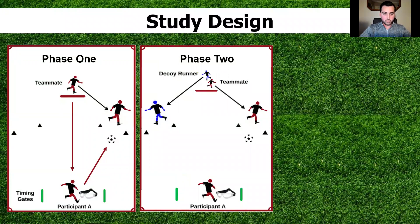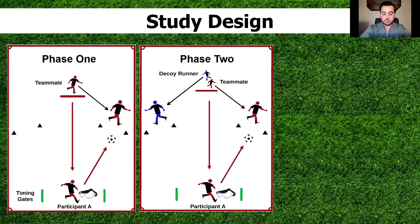The second phase, run with a separate cohort of participants, was very similar to the first. The teammate again passed the ball to the participant, and the participant returned the pass based on whether the teammate ran to the left or right. However, in this phase we introduced a decoy runner. The purpose was to identify if participants could get their head up and identify movement in front of them, and whether they could differentiate between a teammate and potentially an opponent.